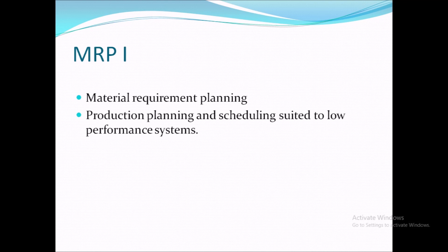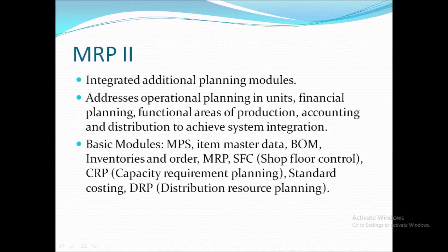Production planning and scheduling is suited to this system. Scheduling means you have 5 machines — which machine will work at what time, which material will be processed for which customer order. All these things were covered in MRP1. Then MRP2 added more modules: operational planning, financial planning, production accounting, and distribution — all these different areas were integrated.